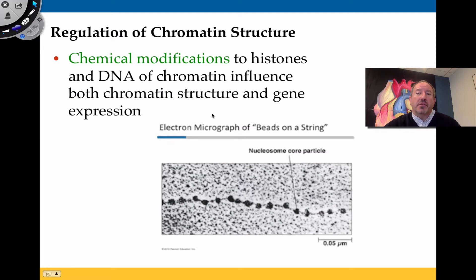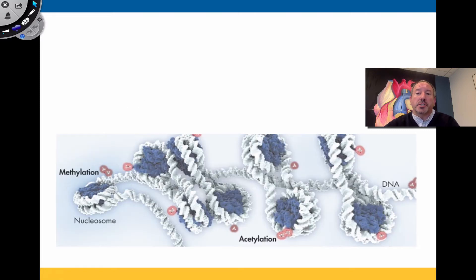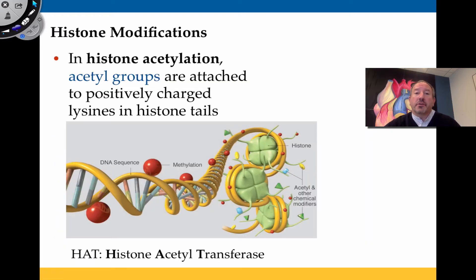The two processes of chromatin modification I want to discuss are acetylation and methylation. Acetylation is when we add acetyl groups to the histone proteins. Methylation is when we add methyl functional groups — CH3 — to the DNA itself. Let's talk first about histone modification, known as histone acetylation.